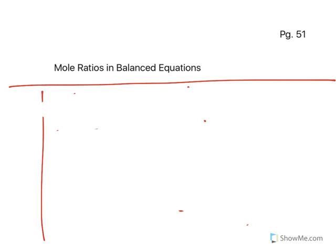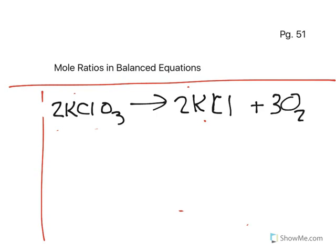So let's go back to the equation we just had. We had 2KClO3 reacts to form 2KCl plus 3O2.